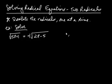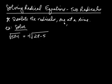Here we're going to continue our discussion of solving radical equations, but now we're in a situation where you have two radicals. Our one important rule is: always isolate the radicals one at a time. So you're going to have two radicals, and we want to get one of the radicals by itself first. Let's try an example.